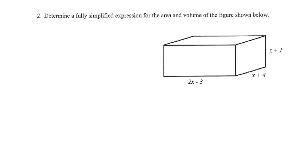Here is our second problem. Similar to the first, we need a fully simplified expression. This time we've got a 3D shape — a rectangular prism — so we're going to find the surface area and the volume. Same as the last one: try this on your own, then we'll come back and see how we match up. Pause the video now.